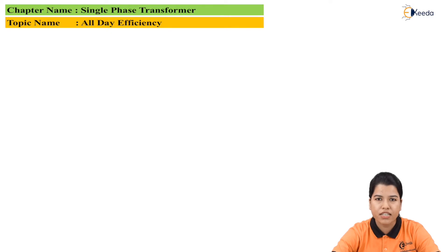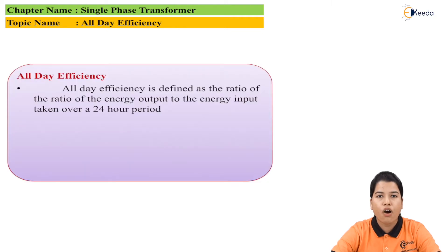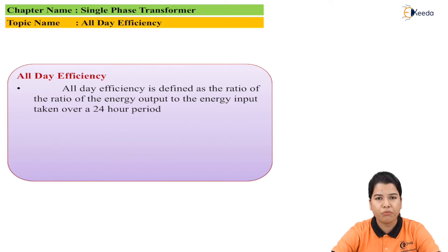The efficiency can be calculated for one day or 24 hours. The definition for all day efficiency can be written as: all day efficiency of the transformer is defined as the ratio of energy output to the energy input for 24 hours.